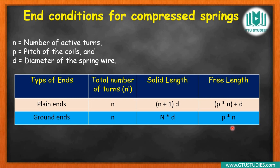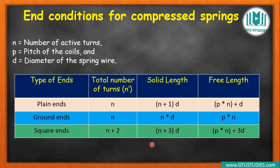Free length for plain end is p into n. For square end, total number of coils is n plus 2, solid length is n plus 3 into d, and free length is p into n plus 3d. The total number of coils is n plus 2 because active coils are n, and upper and lower inactive coils add 2 — so total becomes n plus 2.